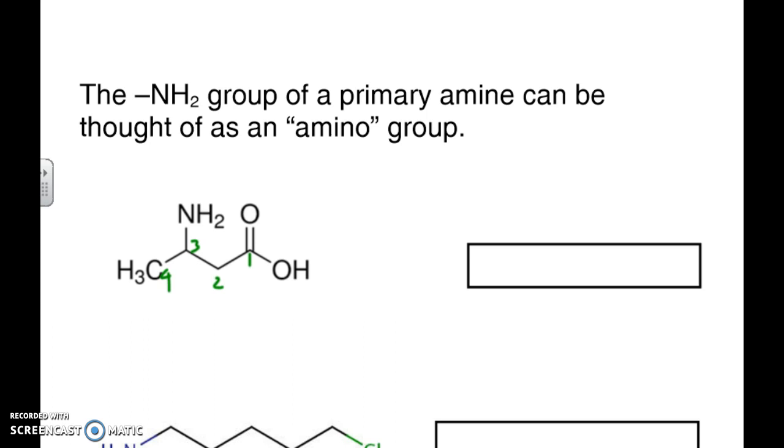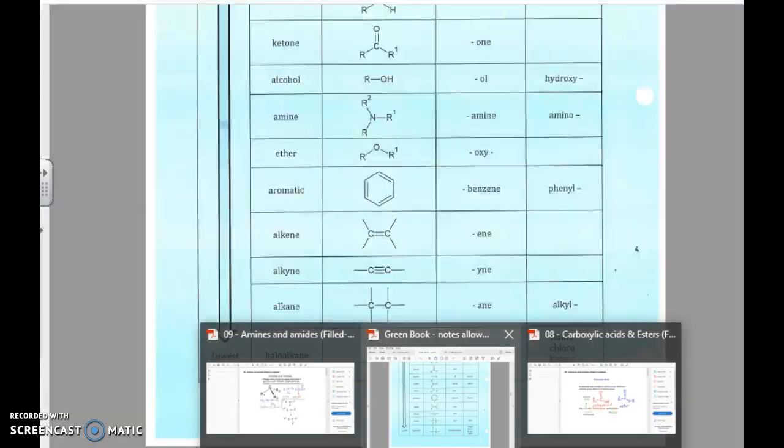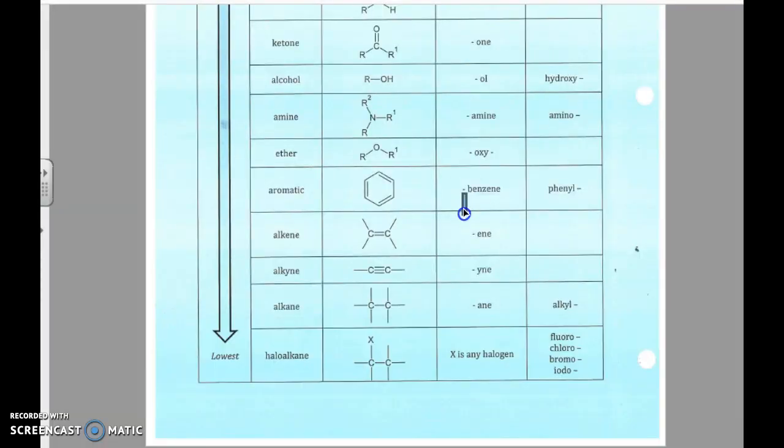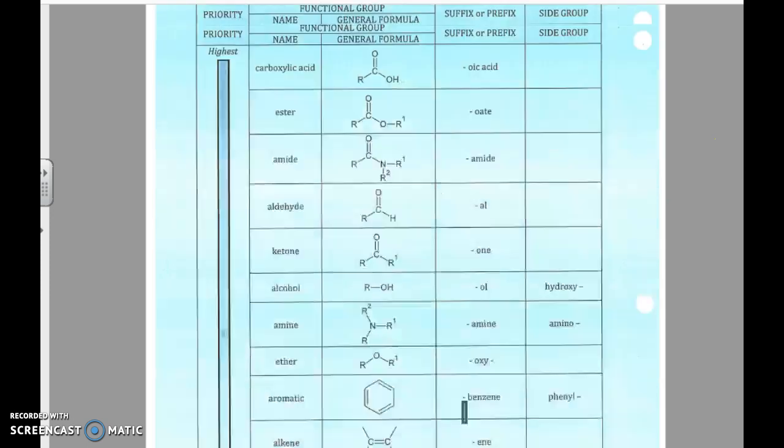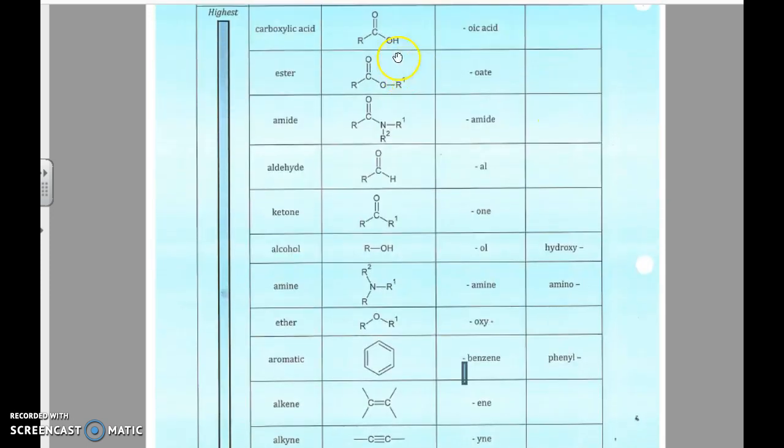So again, just like we've done throughout, what we need to do is look at our order list. Now what I want you to do is, we'll notice in this case that we've got carboxylic acid on the top and we've got amines down here. Now in the naming convention, it'll have a suffix of amine if it's the most important group. If it's not and it's a side chain, then it'll be an amino group.